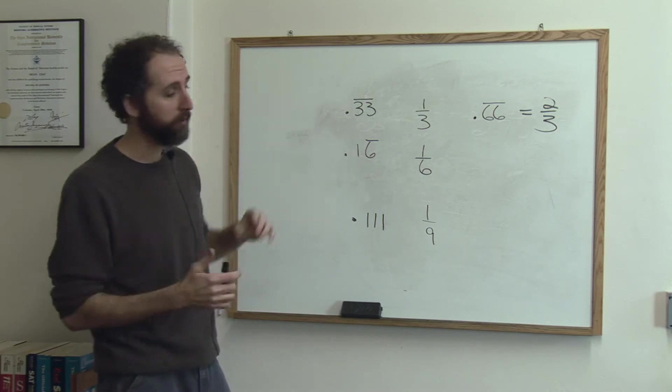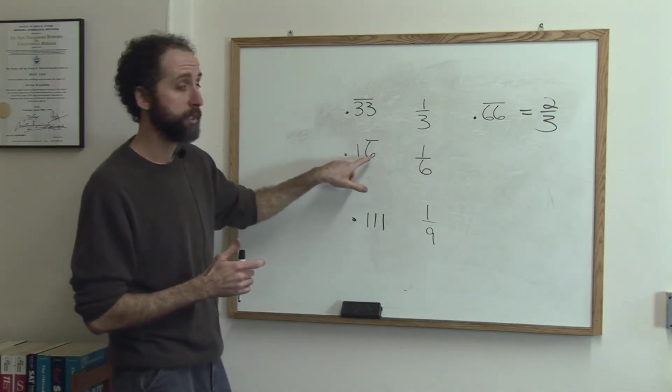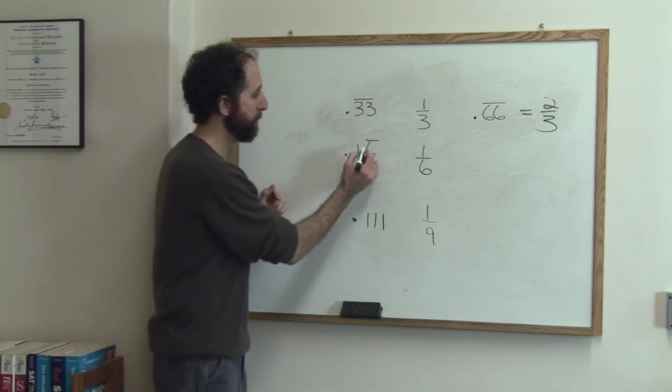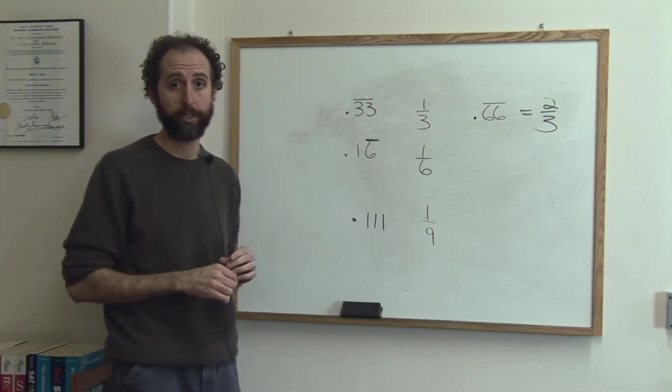This one doesn't come up so much, but it's worth knowing. One-sixth is .16 and the six repeats. So notice the bar is only over the six. That's the only thing that repeats in this one.